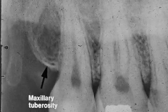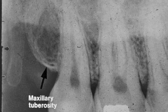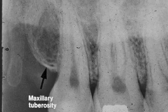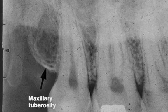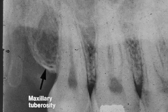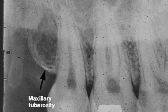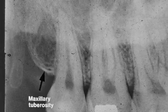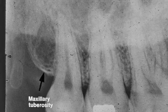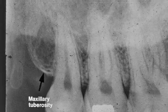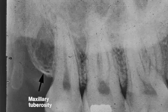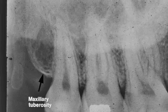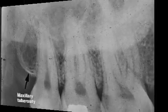The arrow points to the maxillary tuberosity. It curves upward behind the last molar. Posterior to this tuberosity, you can see an extension called the hamulus. It is an extension of the sphenoid bone, sometimes called the pterygoid hamulus. They are radiopaque.